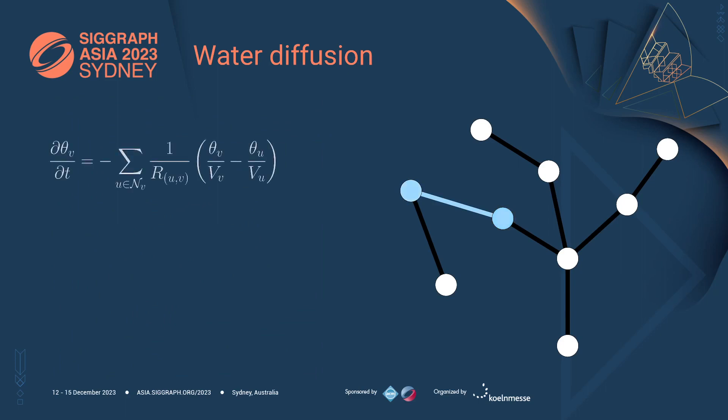We can encode this part of the diffusion with this equation. Here, theta is the water inside the node, V is the volume of the node, and R is a connectivity function depending only on the plant's topology.